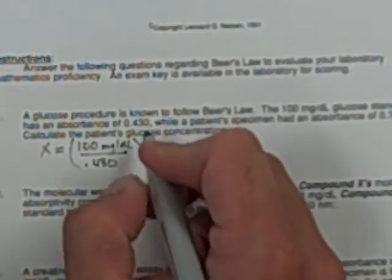All right, piece of cake. Concentration, which we don't know, we can leave as X, is equal to, I have a 100 milligram per deciliter standard with an absorbance of 0.430, and I know that the absorbance of my patient is 0.780.